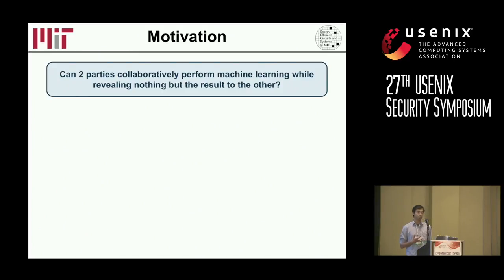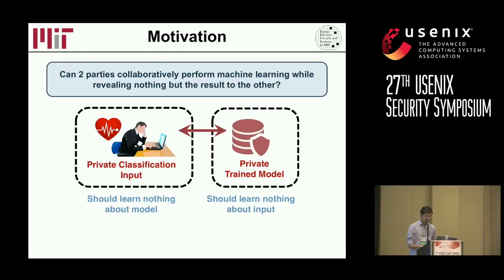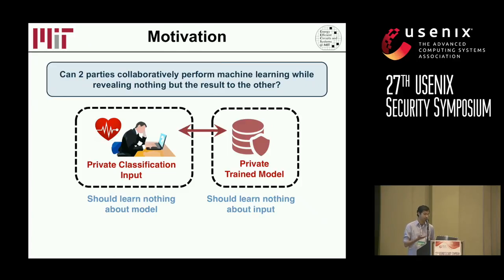So what's the high-level motivation? We're trying to answer this question: if two parties can somehow collaborate to perform some kind of machine learning task, but not reveal anything to the other party except the result to the party who owns the data. More concretely, we're in a setting where one party has inputs he wants to classify, and another party has a model trained from its private data. The first party should learn nothing about the model except the classification result on his input, and the server should not learn anything about the user's input.